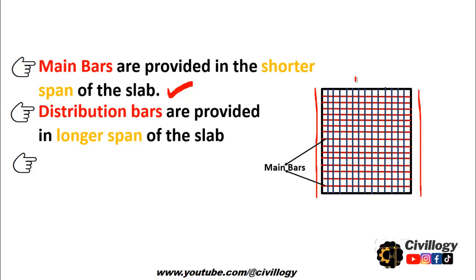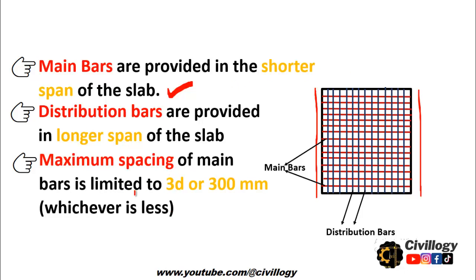The other bar is called a distribution bar. Distribution bars are provided in the longer span of the slab, as you can see in blue colors. Their main objective is to transfer or distribute the load onto the main bars. In a two-way slab, both bars act as main bars because load is transferred on both sides. The maximum spacing of the main bar is limited to 3d or 300 mm, where d is the diameter of the bar being used as main or distribution bar reinforcement - whichever is lesser will be used as the spacing.